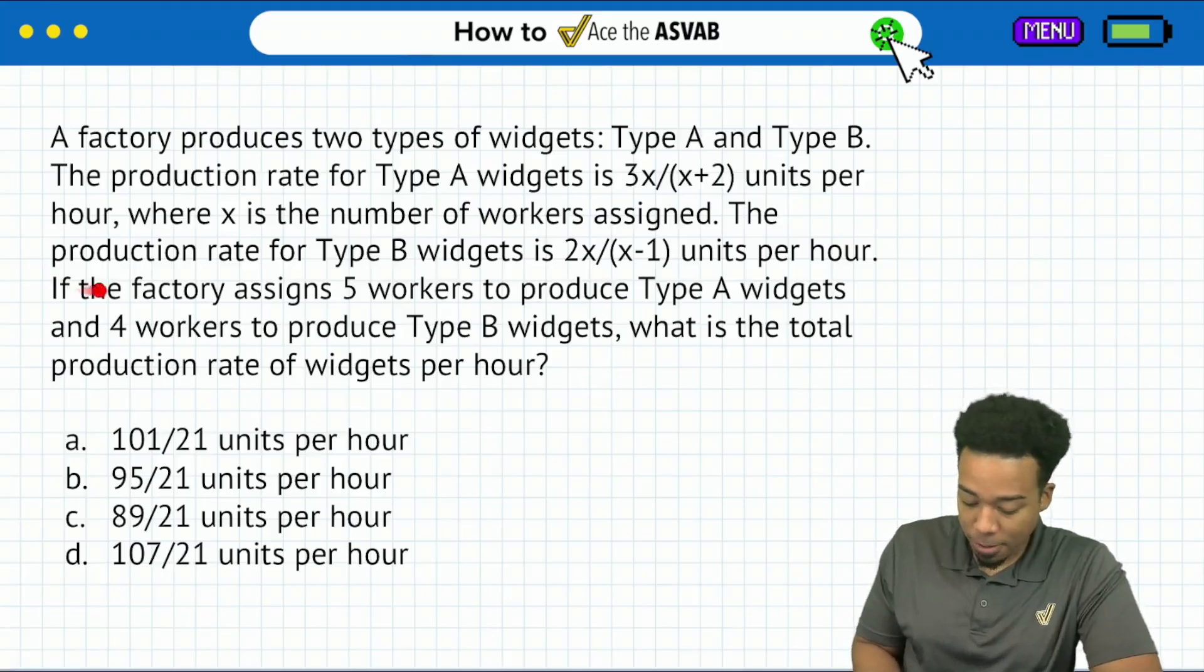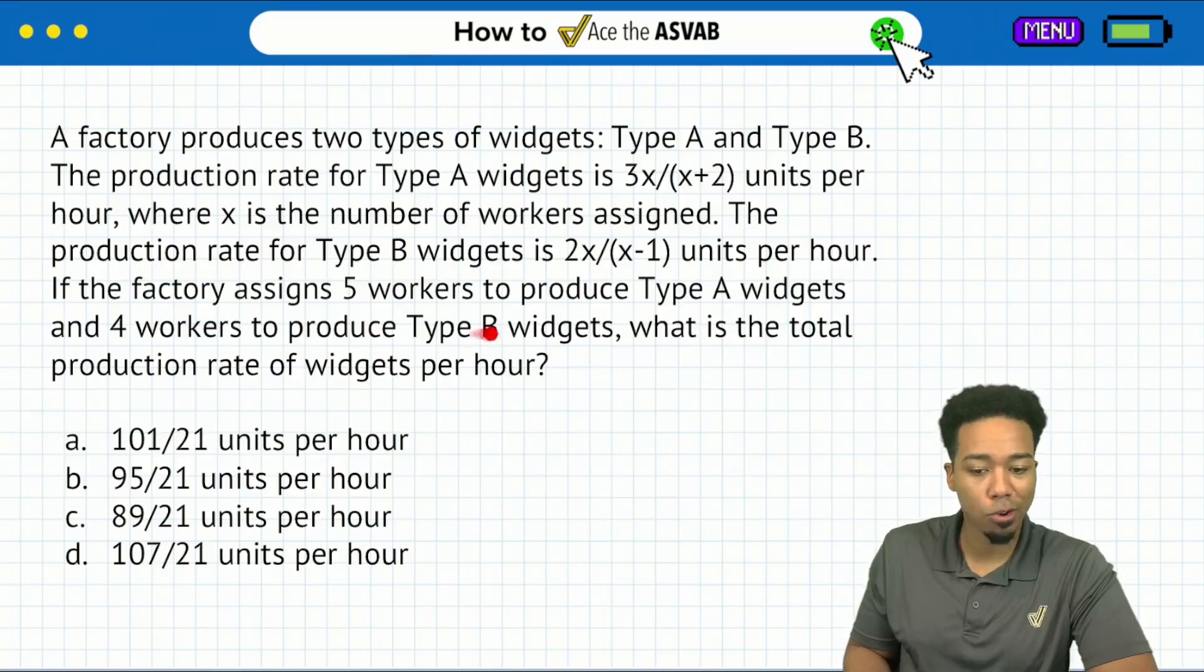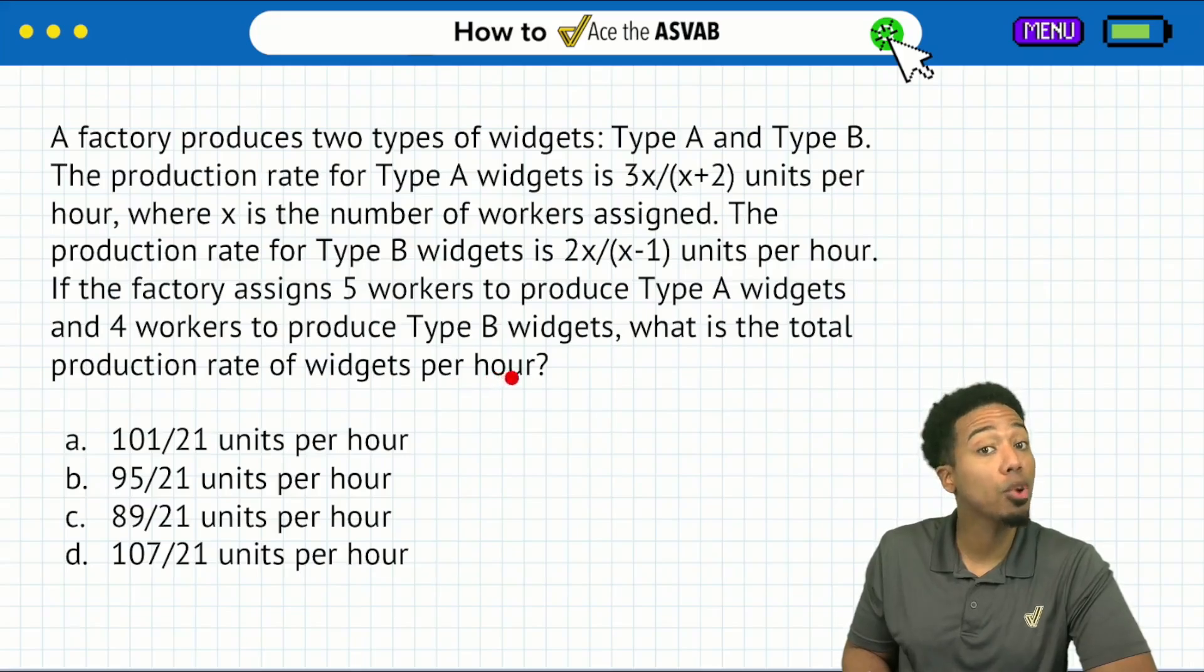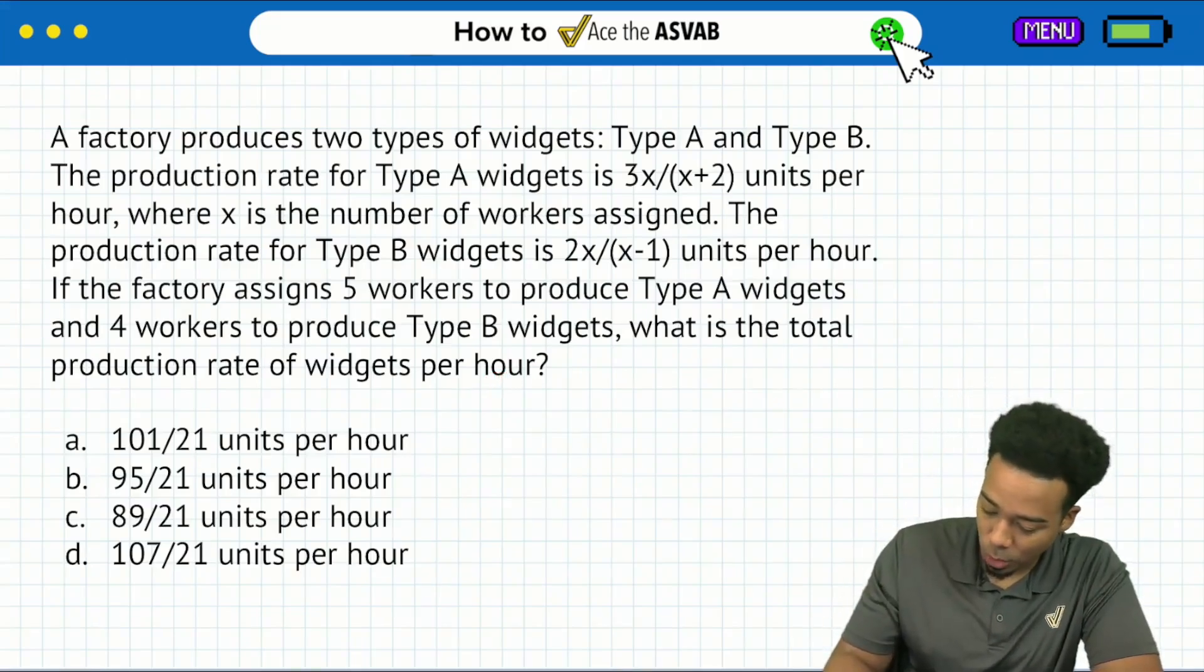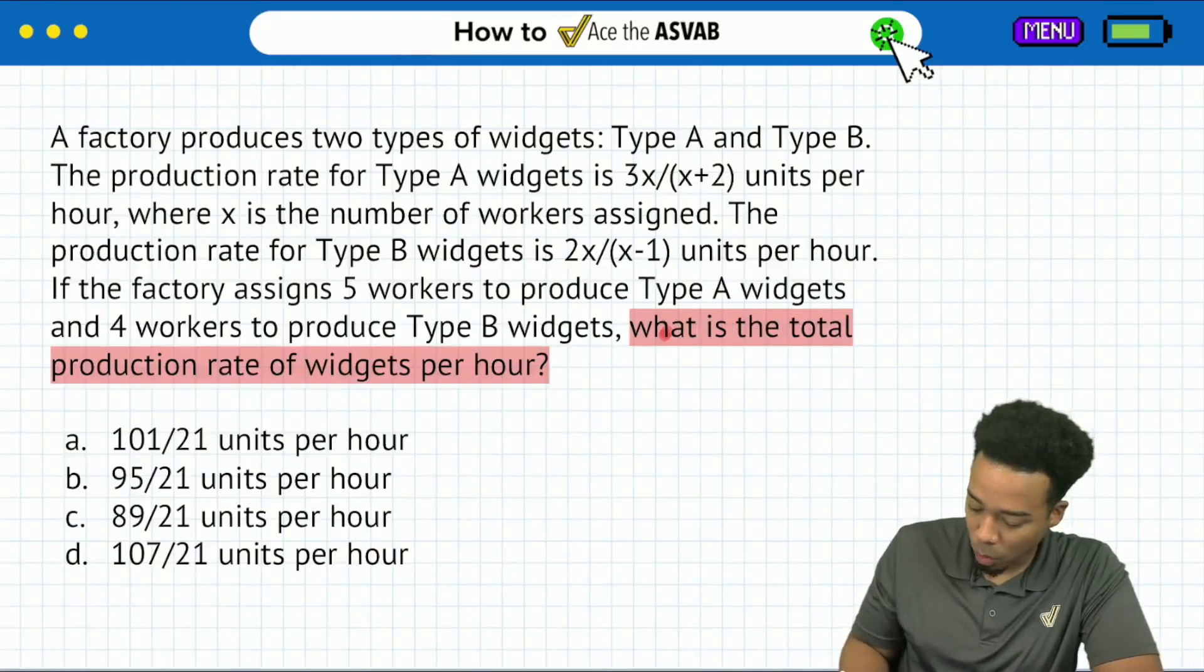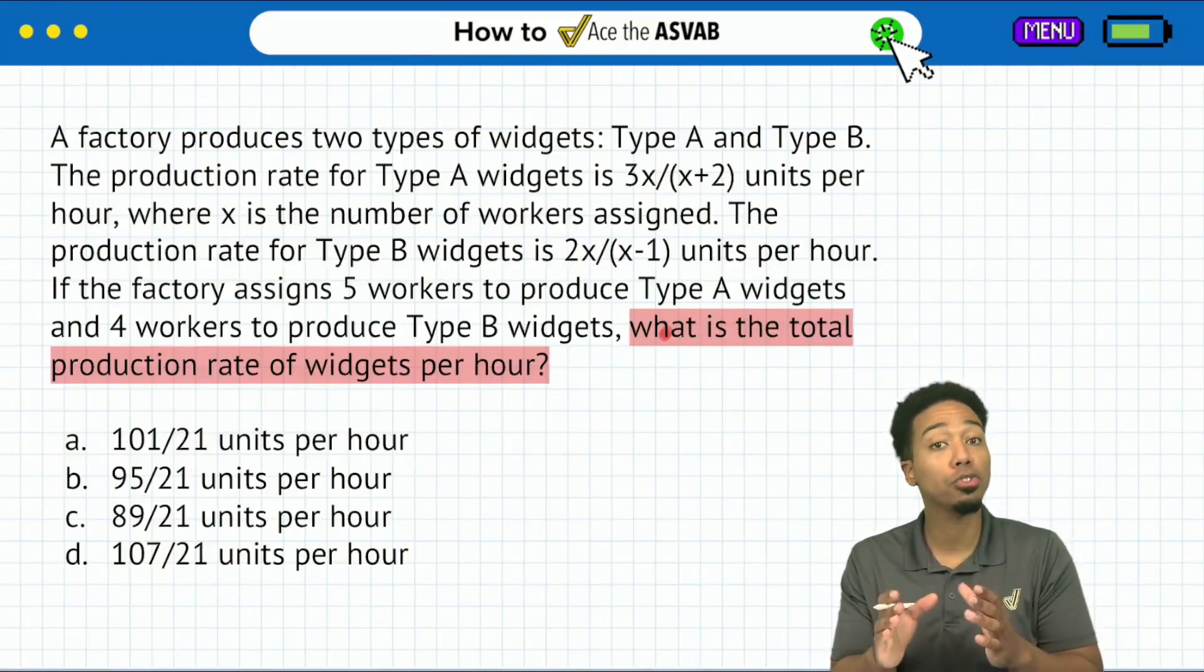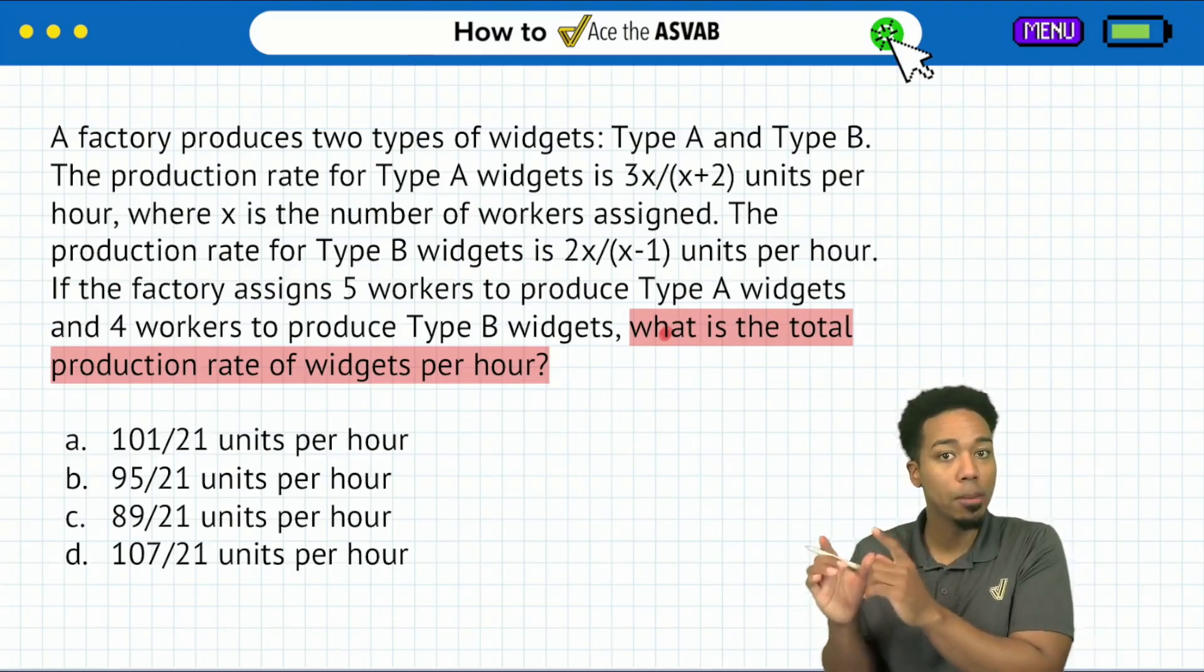So if the factory assigns this many workers for type A, this many workers for type B widgets, what's the total production rate of widgets per hour? That's the question that we want to focus on, my party people. What is the total production rate of the widgets per hour?